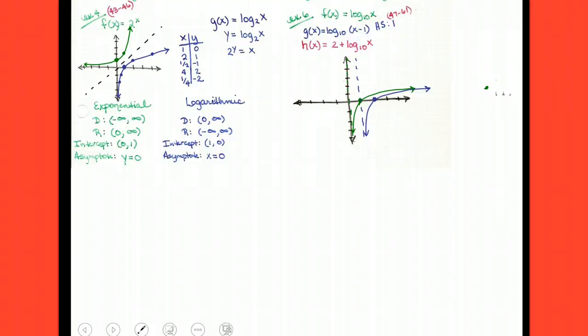Alright. Look at h of x. For h of x, if I go back and I compare it to the original function, the difference is this 2 right here. What's that 2 going to cause? Vertical shift. Vertical shift. Right. Vertical shift of what? Positive 2. Right.